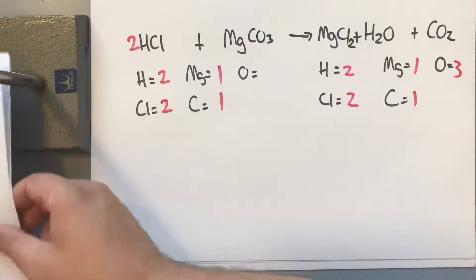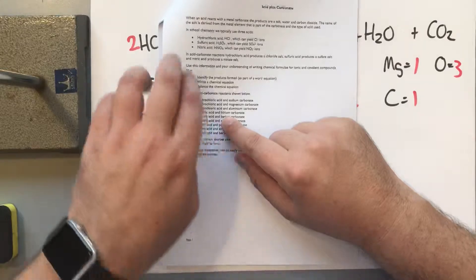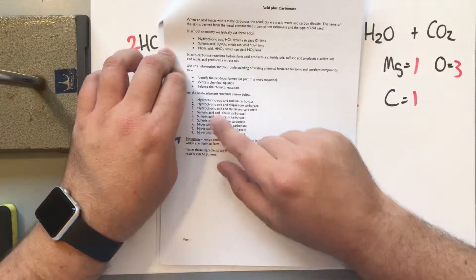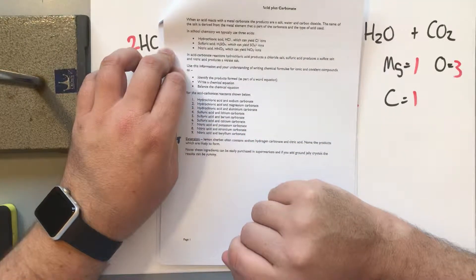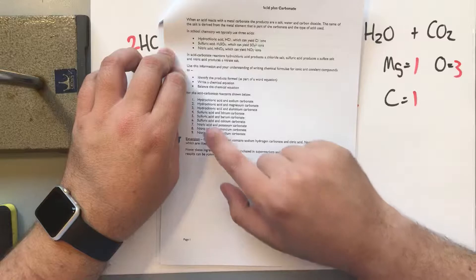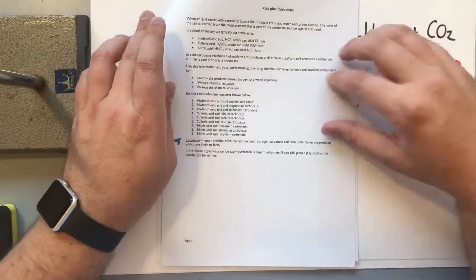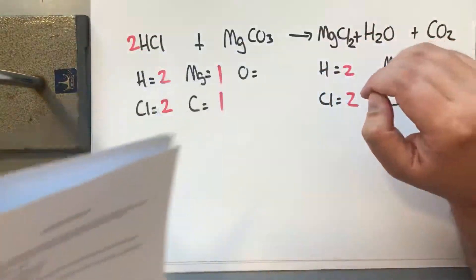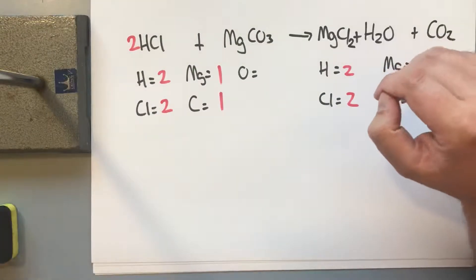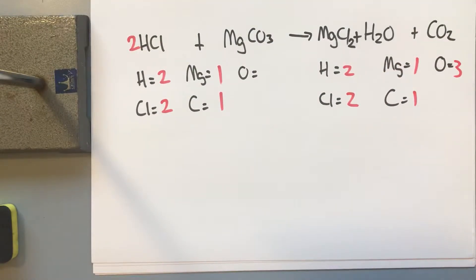I'll leave you to have a go at the other ones. Just remember: sulfuric acid has the formula H₂SO₄, and nitric acid is HNO₃, which you should have in your notes from one of our previous lessons. Good luck.